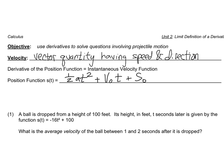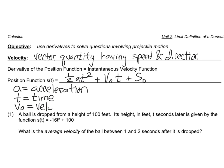Let's define the variables. A is equal to acceleration. T is time — time is whatever the units are in the problem, so seconds, hours, whatever. V-sub-zero is your velocity at time t equals 0. You might know that as initial velocity, because it's the velocity at the starting time.